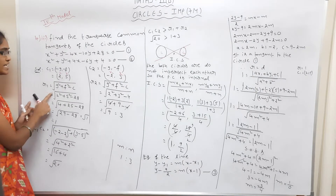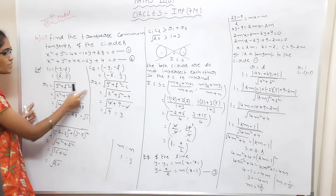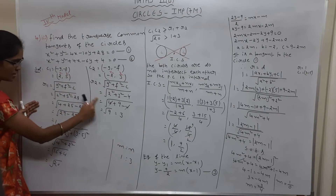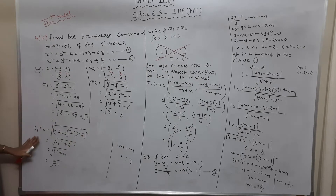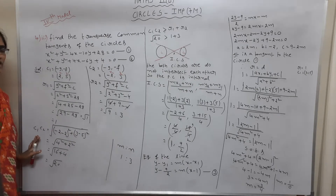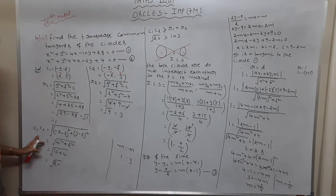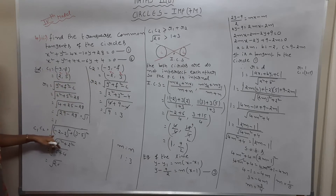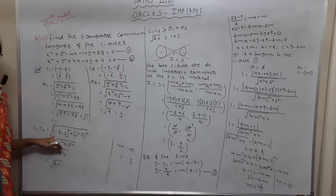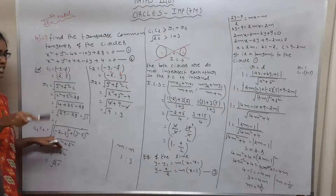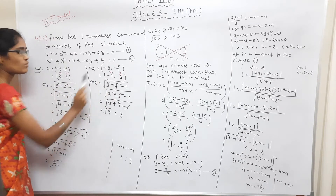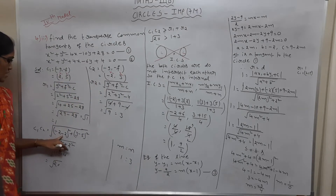The radius formula is r = √(g² + f² − c). Substituting the values we get r1 and r2. Now we check the condition between c1 and c2 using the distance formula: √((x2−x1)² + (y2−y1)²).